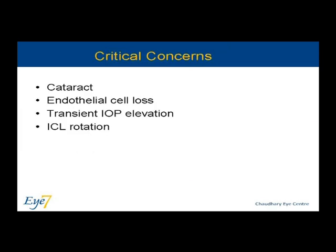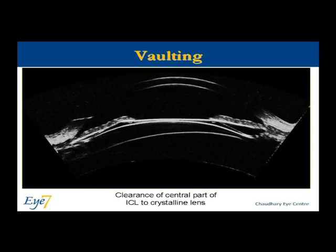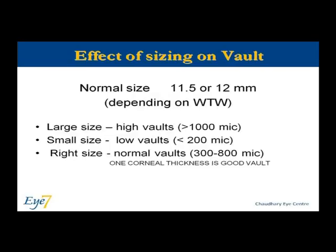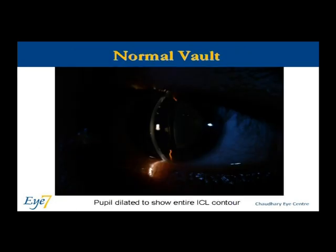The critical concerns with ICL use include cataract, endothelial cell loss, ocular pressure elevation, and ICL rotation. Vaulting is the clearance of the central part of the ICL from the crystalline lens. High vaults of more than 1000 microns and low vaults of less than 200 microns must be avoided, as both are associated with complications. This image shows a normal vault with the entire ICL contour.